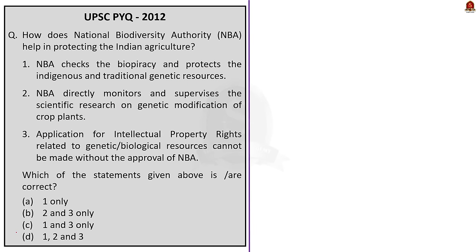The fifth question is a previous year question: How does the National Biodiversity Authority help in protecting Indian agriculture? Statement 1 — NBA checks biopiracy and protects indigenous and traditional genetic resources — is correct. Statement 2 — NBA directly monitors and supervises scientific research on genetic modification of crop plants — is incorrect, as this is not a function of the NBA. Statement 3 — applications for intellectual property rights related to genetic or biological resources cannot be made without the approval of the NBA — is correct. The correct answer is option C.